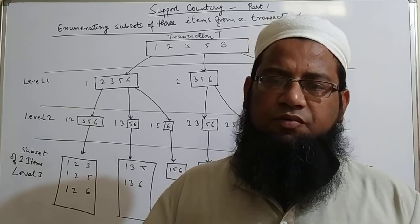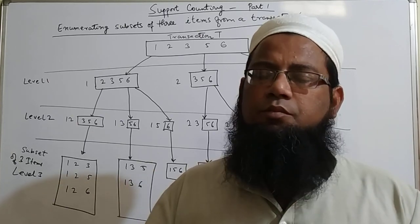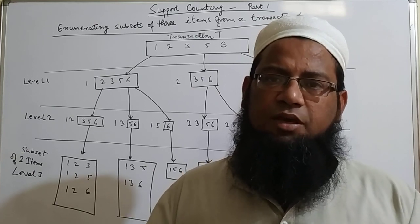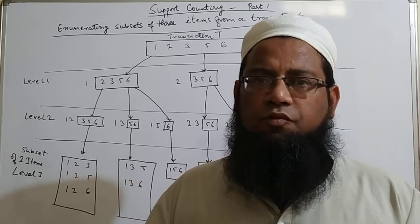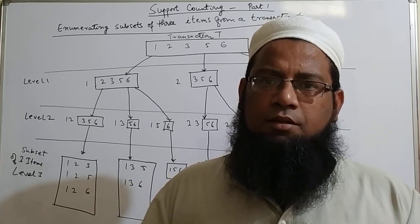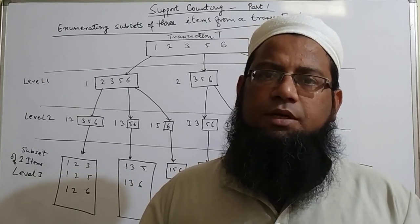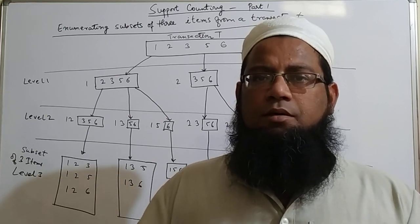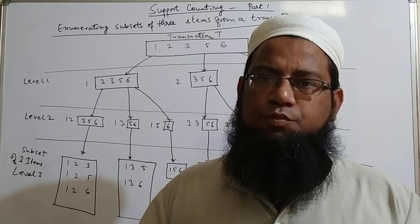Like for example, we have taken in the previous video if you have seen, ball you have to keep it one, bread as two and like that. So if a transaction has got five items, you can number it as one, two, three, four, five, and use a method called enumeration of subset to number it so that we'll find out how many possible candidate itemset can be formed. So let us see this method.